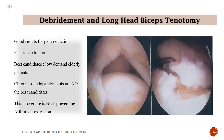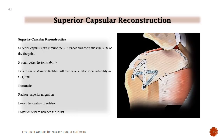Debridement and long head of biceps tenotomy yields good results for pain reduction and allows fast rehabilitation. Best candidates are low-demand elderly patients. Chronic pseudoparalytic patients are not the best candidates, and this procedure does not prevent arthritis progression.